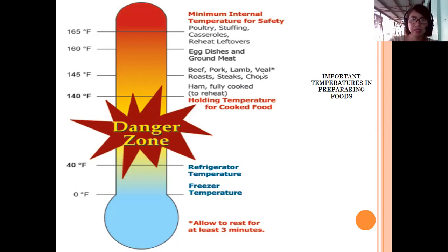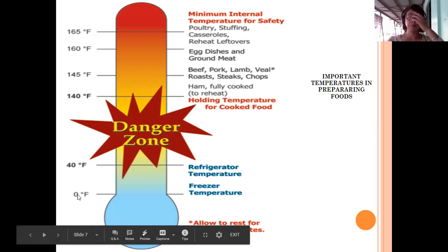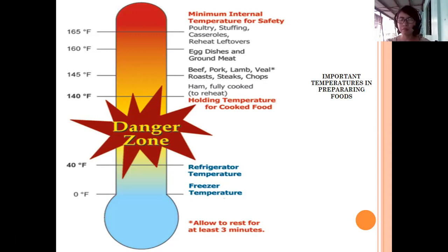Beef, pork, lamb, veal, roast steaks, and chops require 145 degrees Fahrenheit. For freezing point or freezer temperature, it is 0 degrees Fahrenheit. For any questions regarding this lesson, you can message me through my email or messenger. That's all for this lesson. God bless everyone. Stay safe.